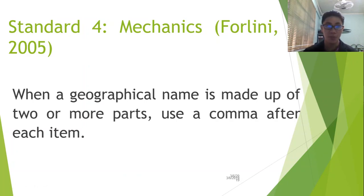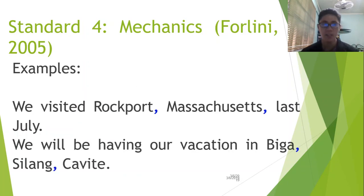Now, were you able to digest essential and non-essential expressions? If you still need to go back to the previous parts, feel free to do so. Since this is a lesson playlist, we follow your pace. Let's go now to the rule on geographical names made up of two or more parts. You may want to apply this when writing your addresses on application forms. We visited Rockport, Massachusetts last July. We will be having our vacation in Biga, Silang, Cavite. Take note, these items are separated with the use of the comma. So, always remember to do that.